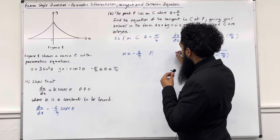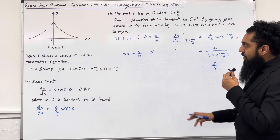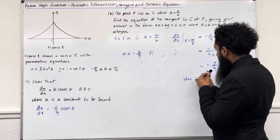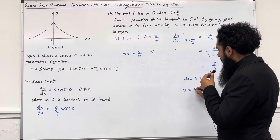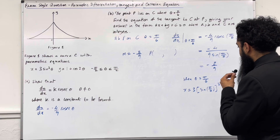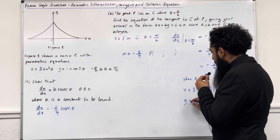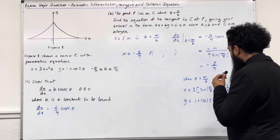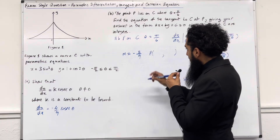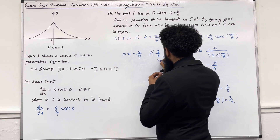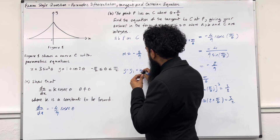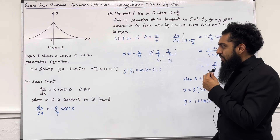Now I need to work out the coordinates of P. I substitute theta equal pi over 6 into both parametric equations. When theta equals pi over 6, x is equal to 3 sine pi over 6 cubed, which gives 3 over 8. y is equal to 1 plus cos of 2 times pi over 6, which gives 3 over 2. So the coordinate of P is (3/8, 3/2), giving x1 and y1. I can now apply y minus y1 equals M times x minus x1 to find the equation of the tangent.